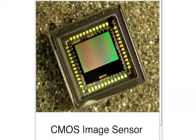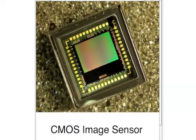A CMOS image sensor is an alternative to a CCD imaging sensor and it's found in all types of cameras, including cell phones and web cameras. Battery life on a CMOS image sensor is much longer than that of a CCD sensor. Thus, you'll find them in portable cameras, from phone cameras to wireless security cameras.